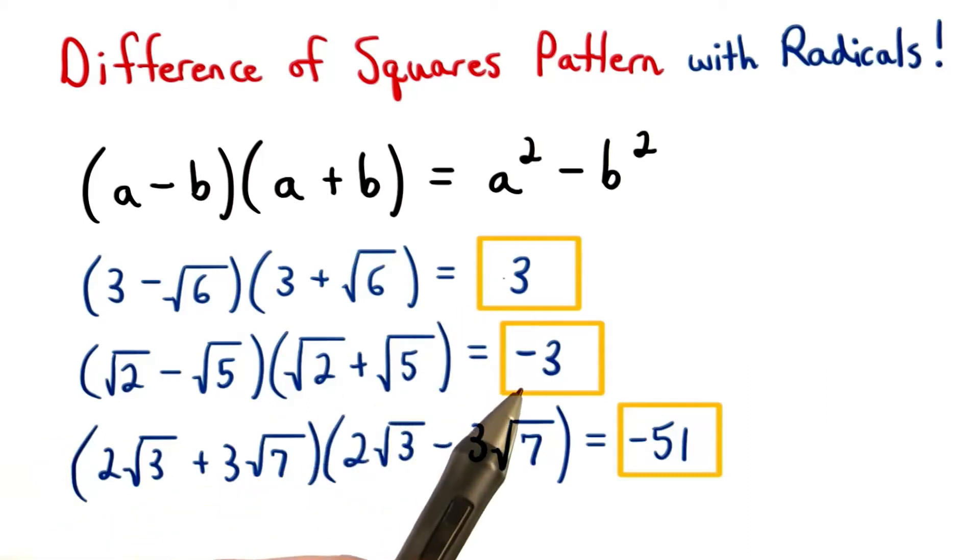We'll have positive 3 for the first one, negative 3 for the second one, and negative 51 for the third one. Great work if you found all three of those.